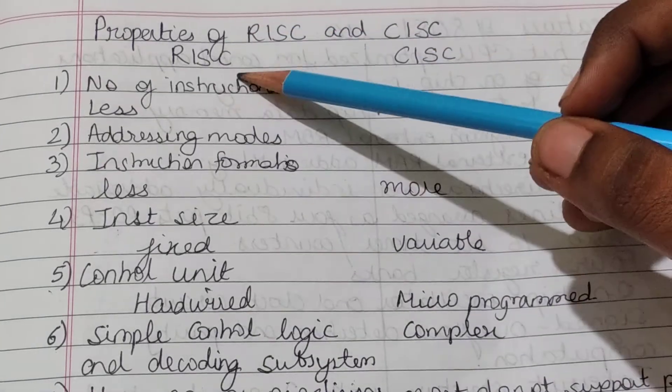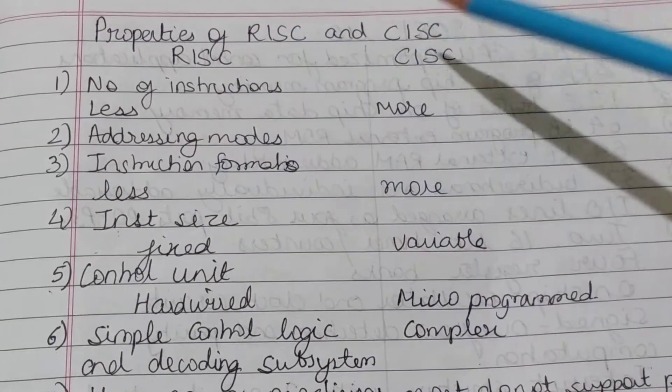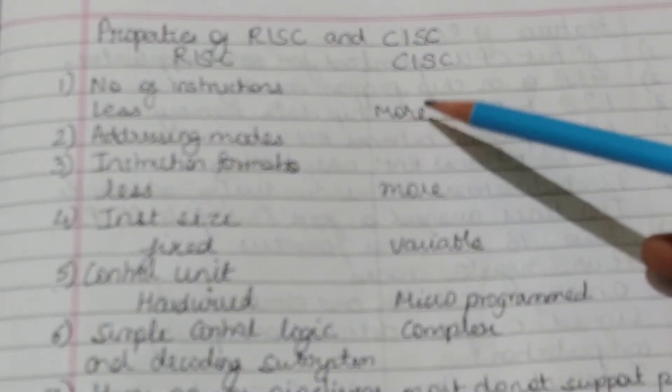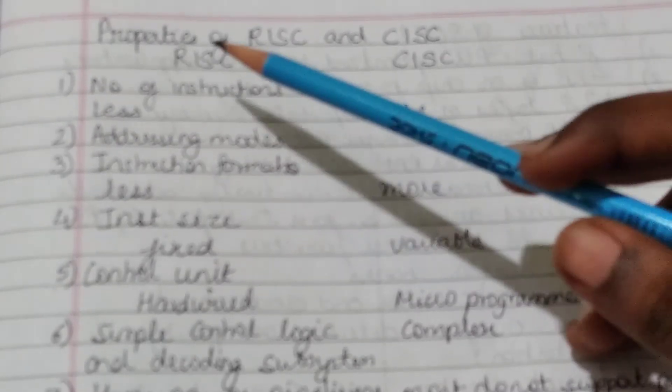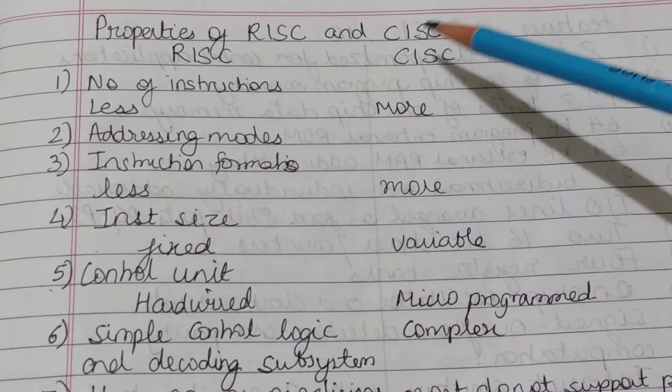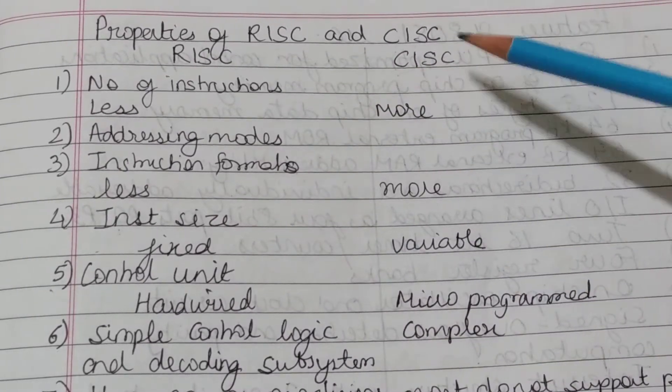For RISC, there are fewer instructions, while CISC has more instructions. The addressing modes and instruction formats for RISC are less, but for CISC they are more.